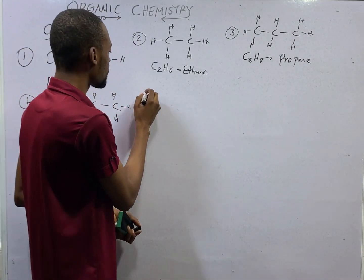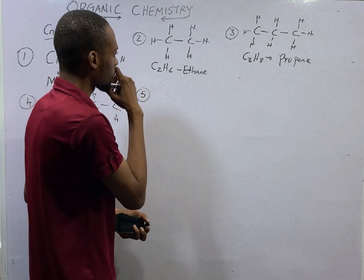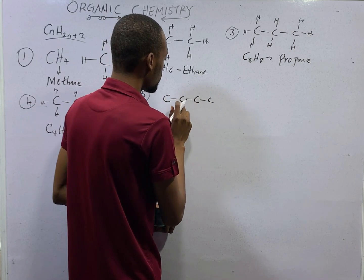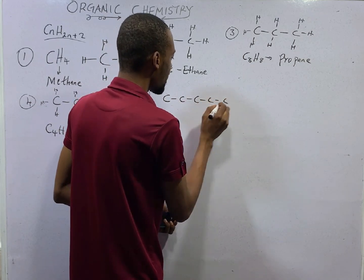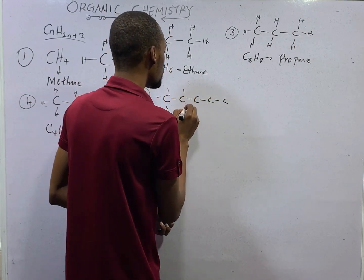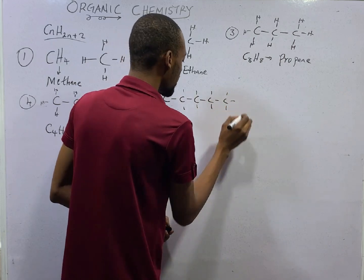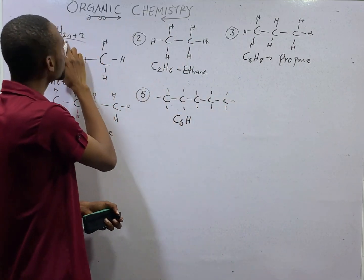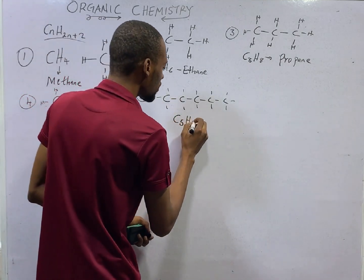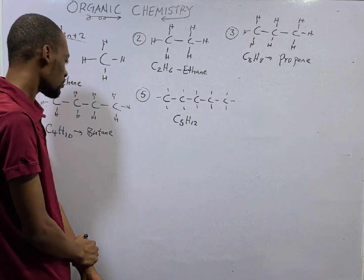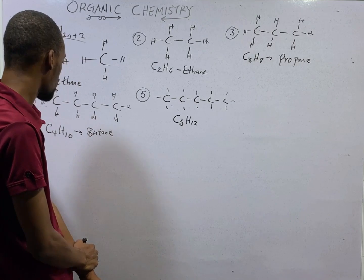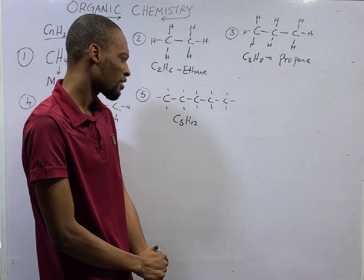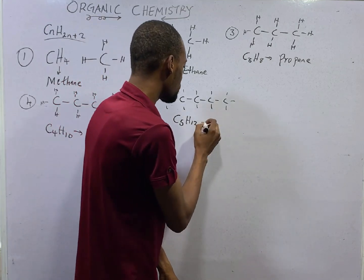Now the fifth member has 5 carbons with hydrogen around it. This is C5H12 — 2 times 5 is 10, plus 2 is 12. The alkane with five carbons is referred to as pentane.